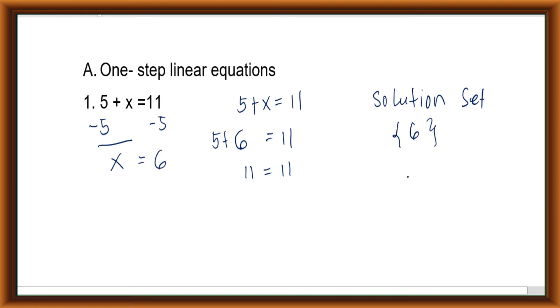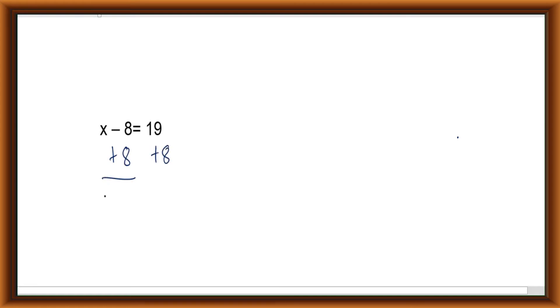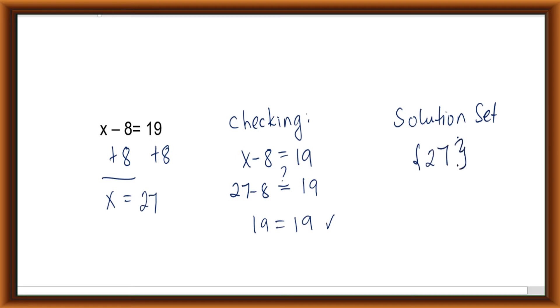Next, consider x minus 8 equals 9. Applying the addition property of equality, I add both sides by 8, so x equals 9 plus 8, which gives x equals 27. To check, substitute x = 27 into x minus 8 equals 9: 27 minus 8 equals 19, and 19 equals 19. This is correct, so our solution set is {27}. In examples 1 and 2, I used the addition property of equality.